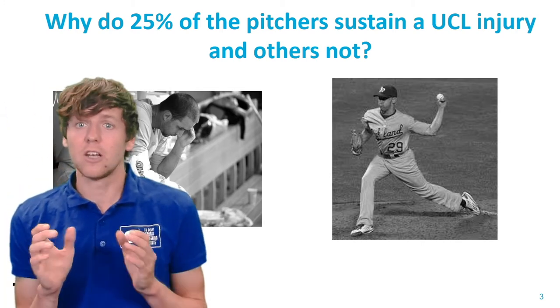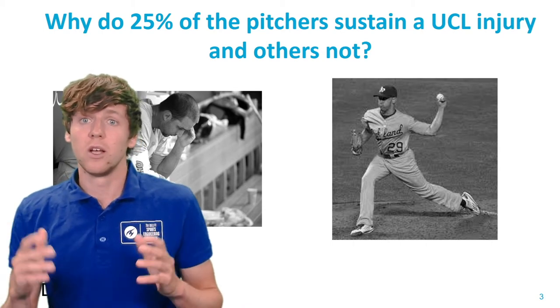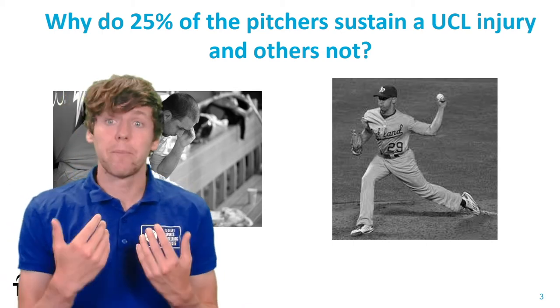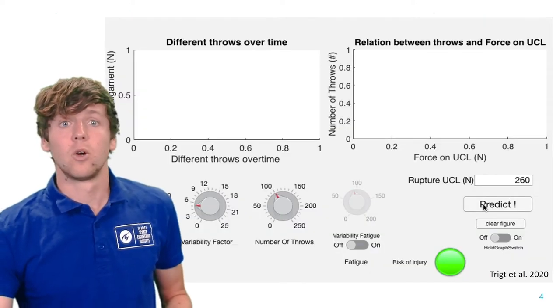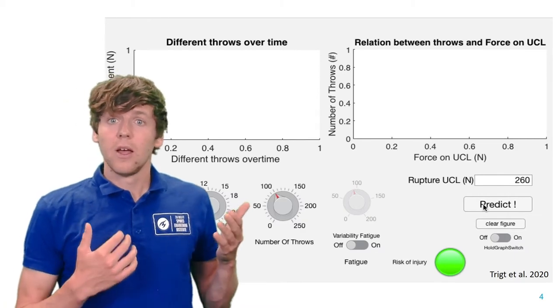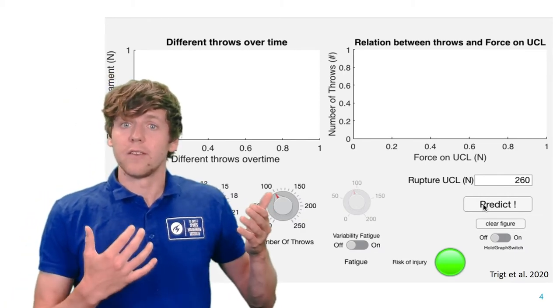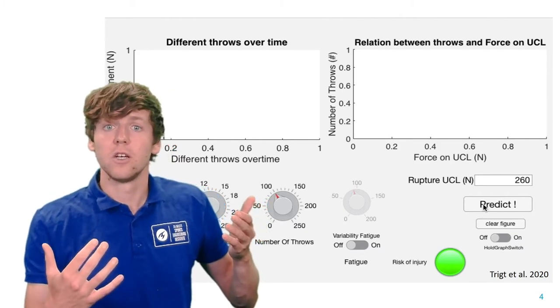The load magnitude is related to elbow injuries. However, the load magnitude on its own cannot explain why one pitcher sustains an injury and another does not. So recently we developed a simple explanatory model, and this model illustrates that a higher within individual load variability increases the injury risk.